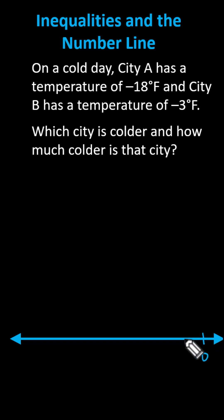we have zero, negative one, negative two, negative three. Let's just say negative three is approximately here. Notice negative 18 is going to be much further to the left. Let's just say here.